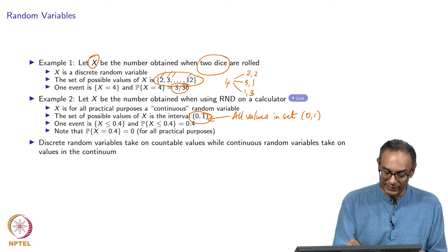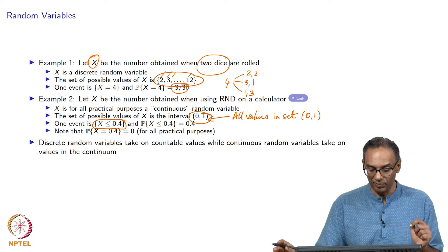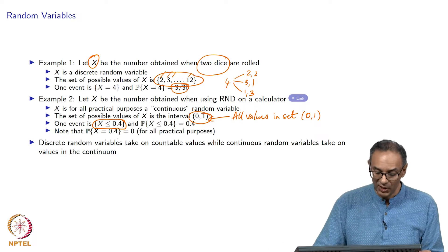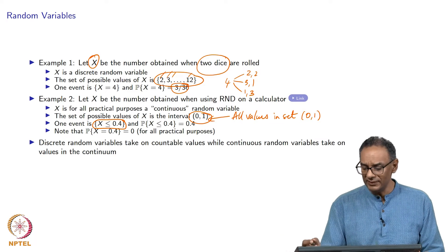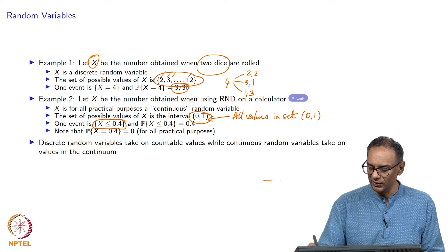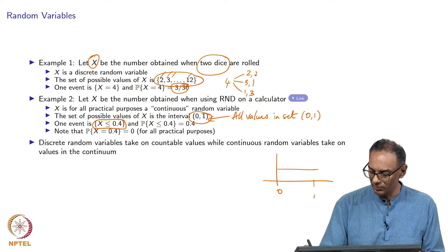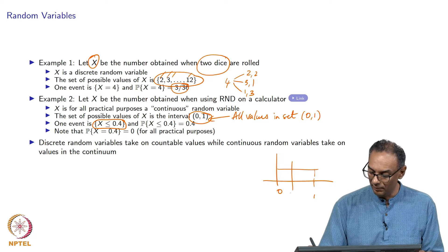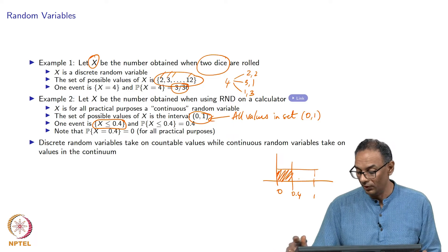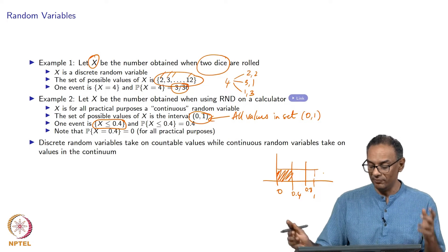An event is written like this: the event that the random variable is less than or equal to 0.4. If you ask what is the probability of getting a number less than 0.4, it turns out that all these values are uniformly distributed between 0 and 1. Therefore, a number less than 0.4 will have a probability of 0.4, and a number less than 0.8 will have a probability of 0.8.